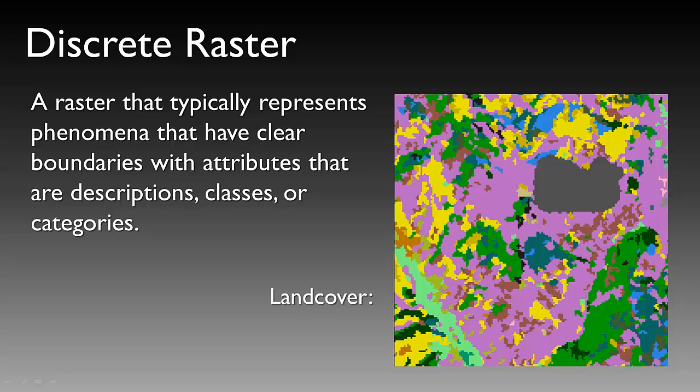When we say clear and concise boundaries in discrete rasters, don't confuse this with vector data sets that have a very discrete boundary. A discrete raster data set, such as the land cover analysis shown on screen, has a clear boundary saying this is one type of land cover, and moving to the next cell could represent another type of land cover.